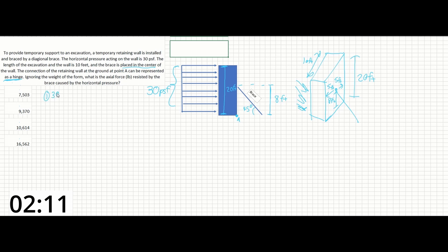So step one will be 30 pounds per square foot times the 10 feet length of the wall, giving us 300 pounds per vertical foot.